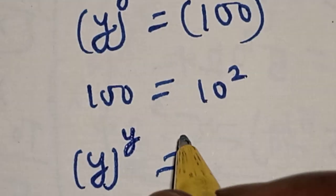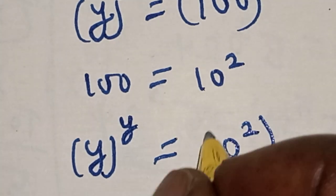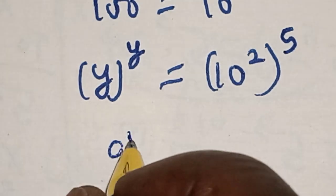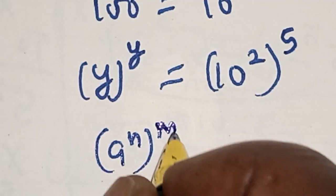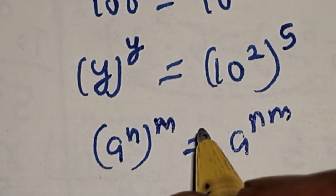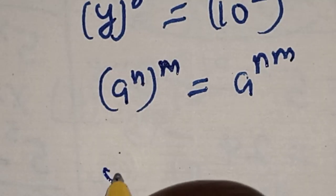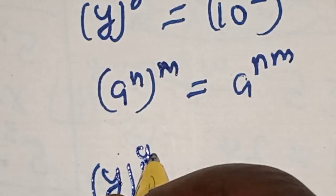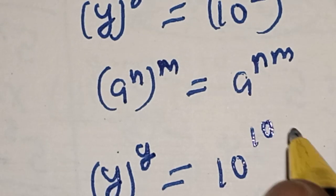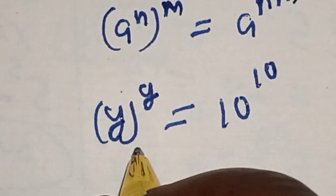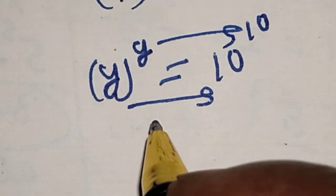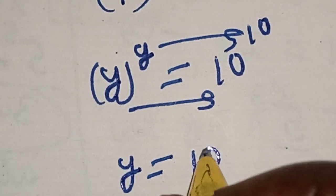Now remember, 100 is equal to 10 squared, so this becomes y raised to power y is equal to 10 squared raised to power 5. Using the rule that a raised to power n raised to power m equals a raised to power nm, we get y raised to power y is equal to 10 raised to power 10. Since the bases and exponents match, y is equal to 10.